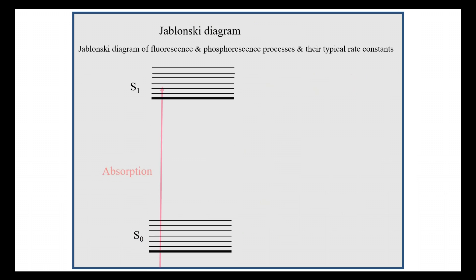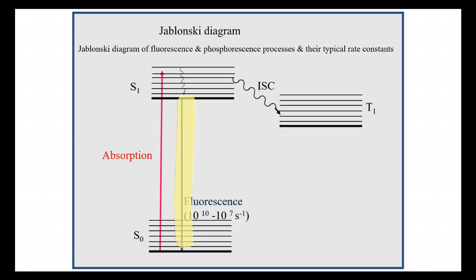Thus, fluorescence is the direct emission from S1 to S0. The typical timescale is 10^-10 to 10^-7 per second. Whereas phosphorescence is delayed emission from T1 to S0—that is, the electron moves from S1 to T1 and then to S0. That is why it is called delayed emission. The typical time range is 10^-5 to 10^-3 per second.